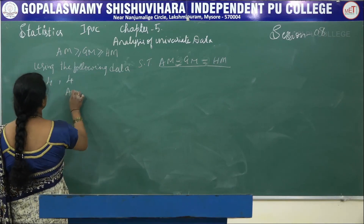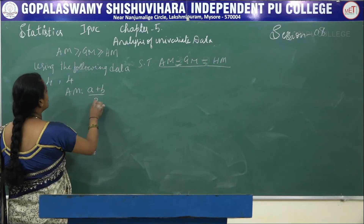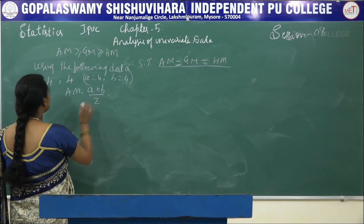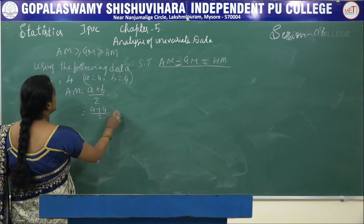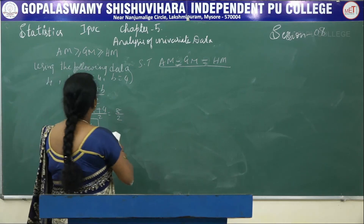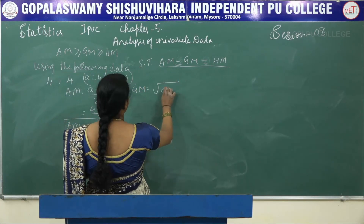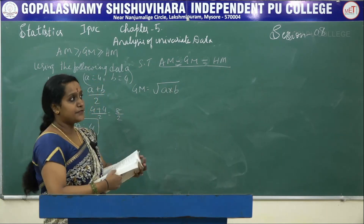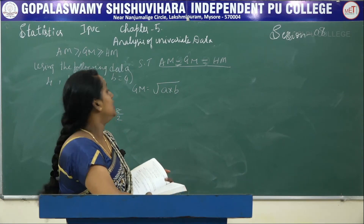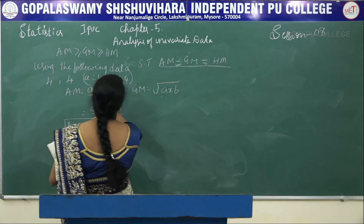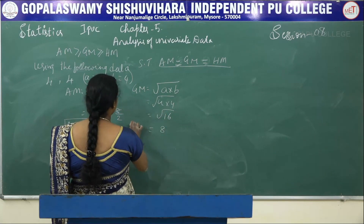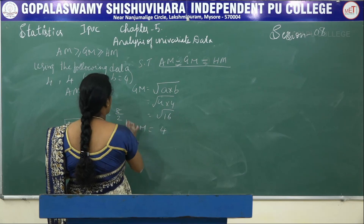To find AM, the formula is (A + B)/2. Here A = 4 and B = 4, so AM is (4 + 4)/2 = 8/2 = 4. To find GM, it is the square root of A × B. That is square root of 4 × 4 = square root of 16 = 4. So GM is equal to 4.